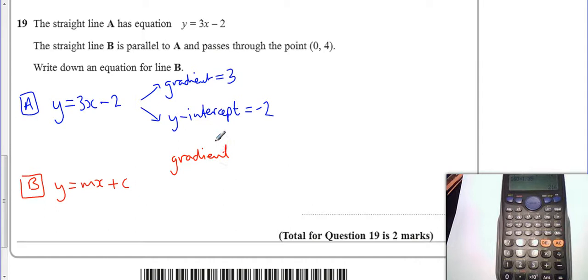The gradient: it says it's parallel. Now if it's parallel, it has the same gradient. So this gradient is also 3, so we can feed that into there.